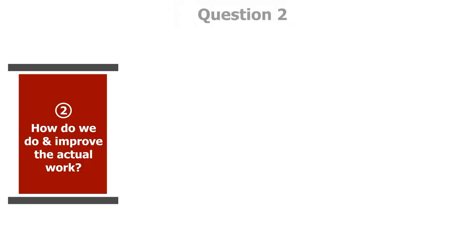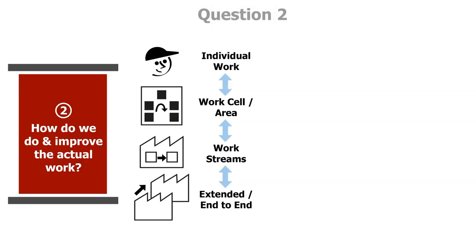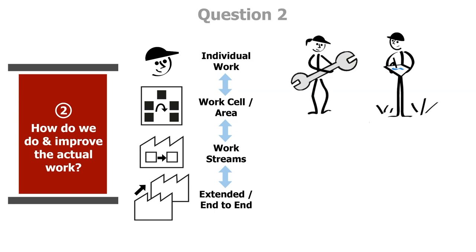Question two asks how do we do and improve the actual work? What changes in the work need to be made to solve the problem? This is also fractal. From an individual work level to a value stream level or to an enterprise value stream level.